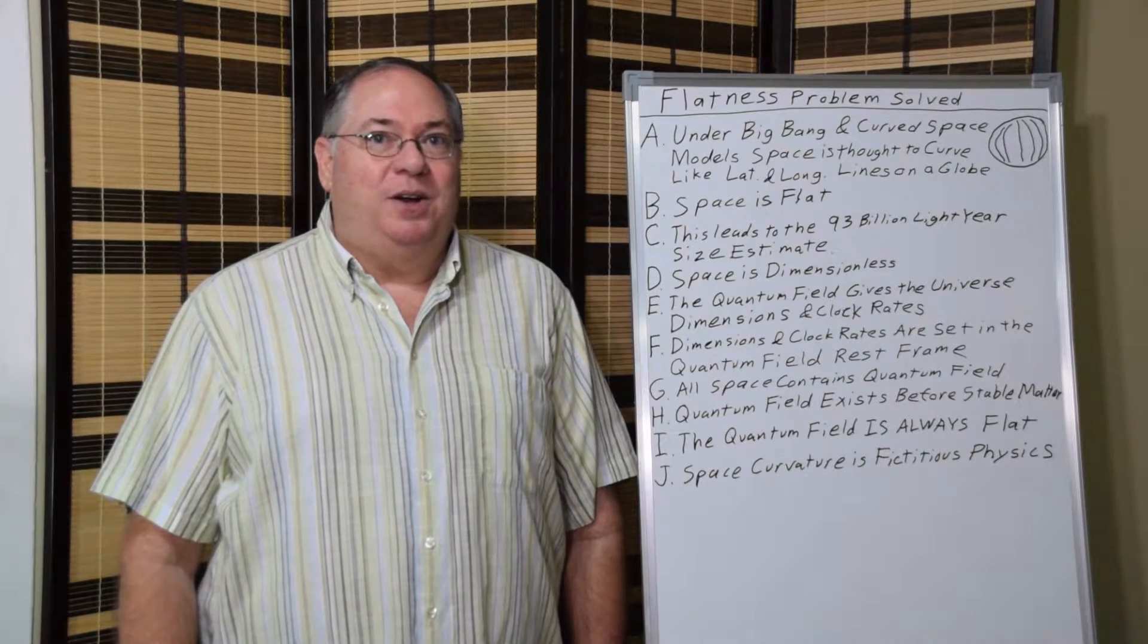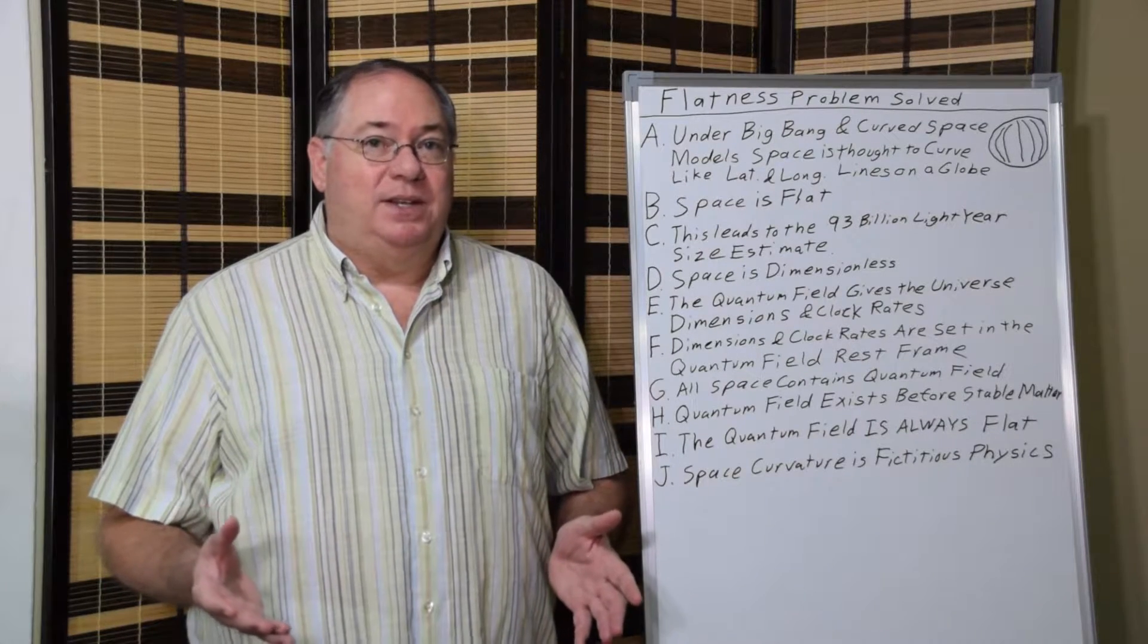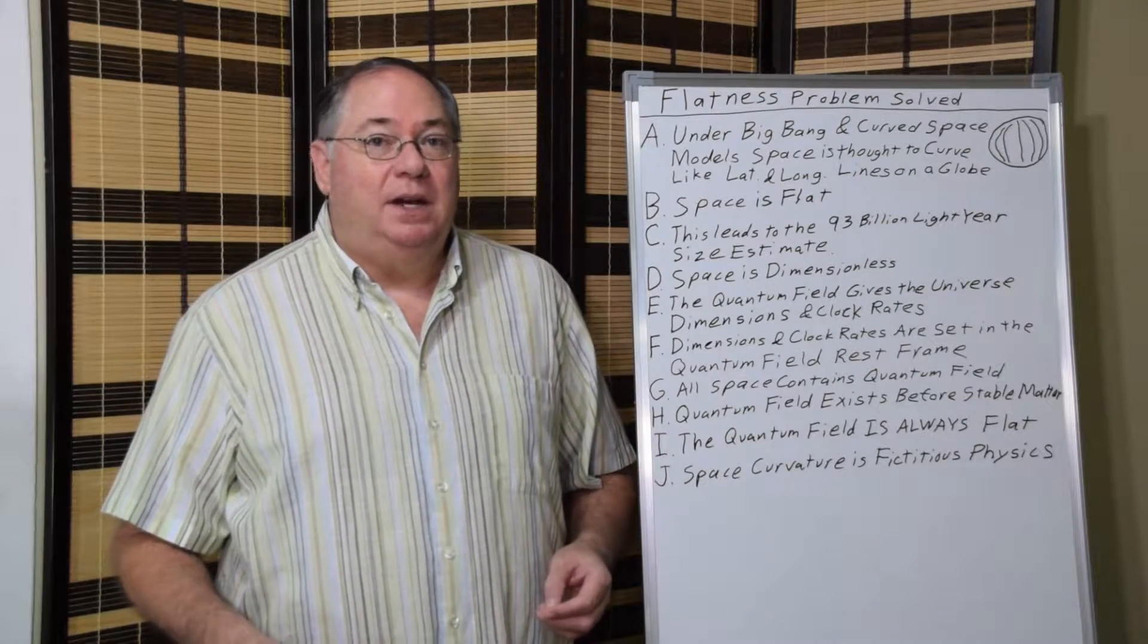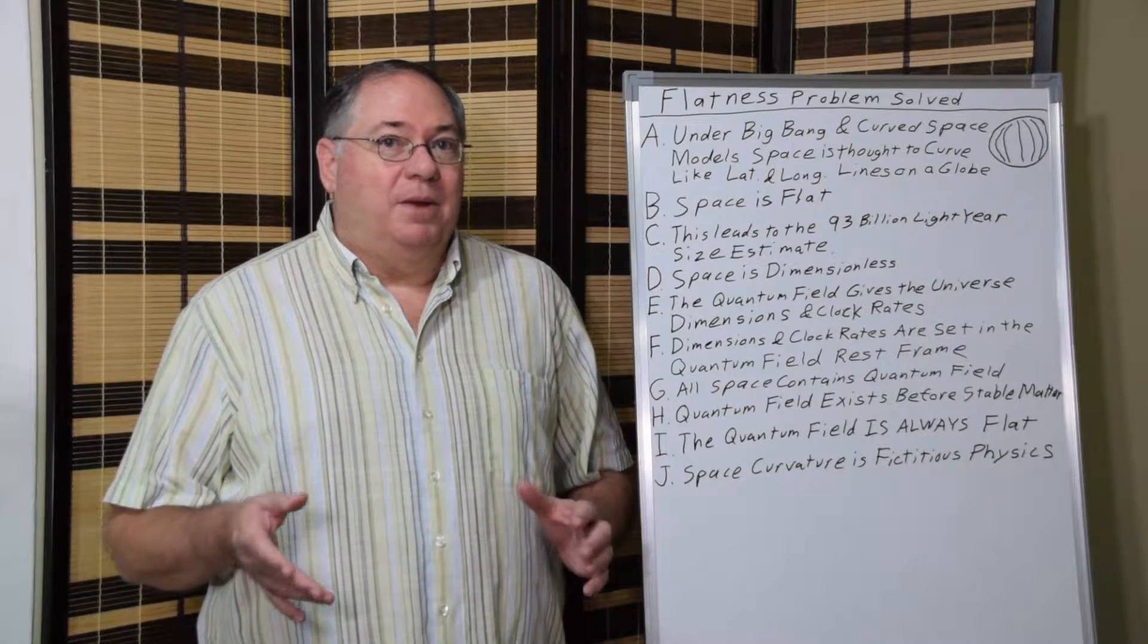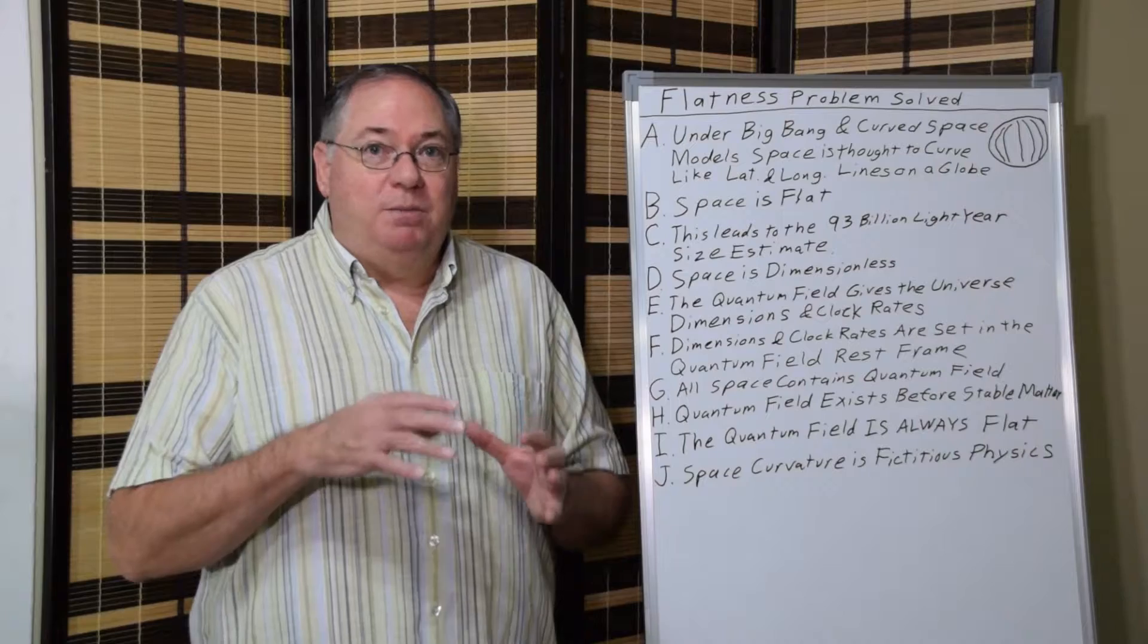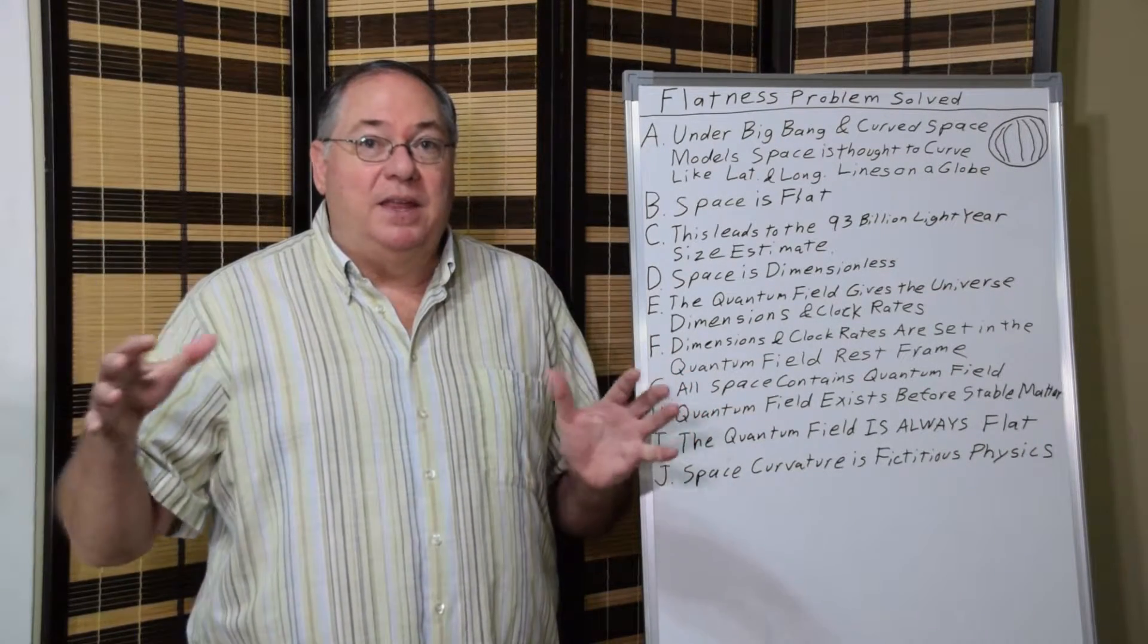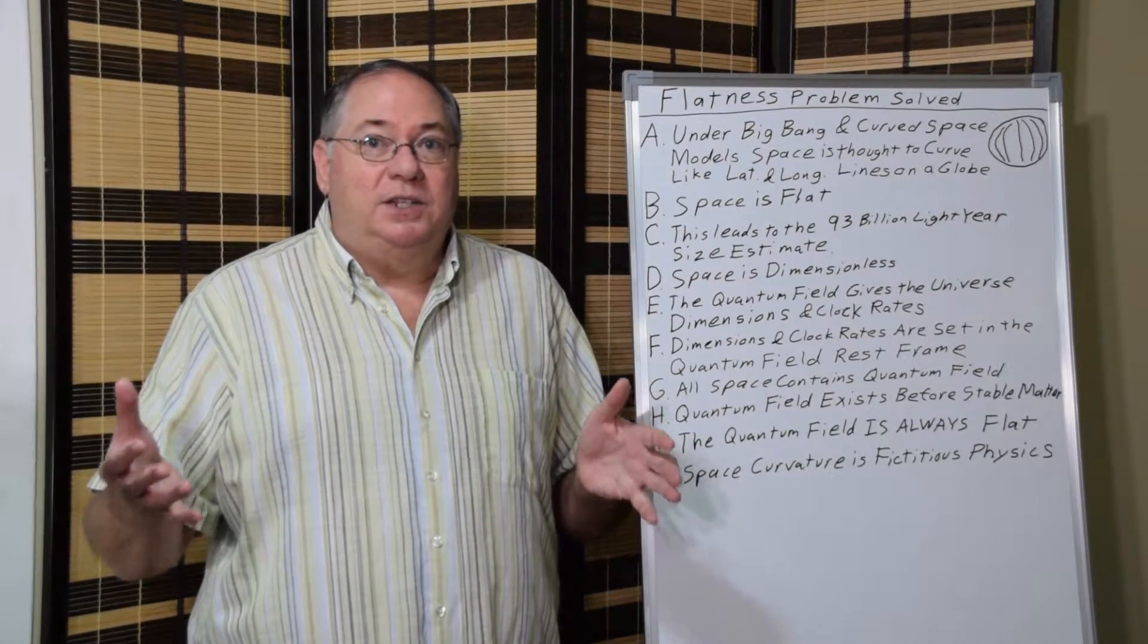For those that aren't aware, some physicists think that space is curved based on Einstein's idea that space has curvature, so they think the universe has curvature. And because the universe under the Big Bang model starts at a point and grows in a spherical shell, they think that the universe should have curvature like a sphere has curvature.